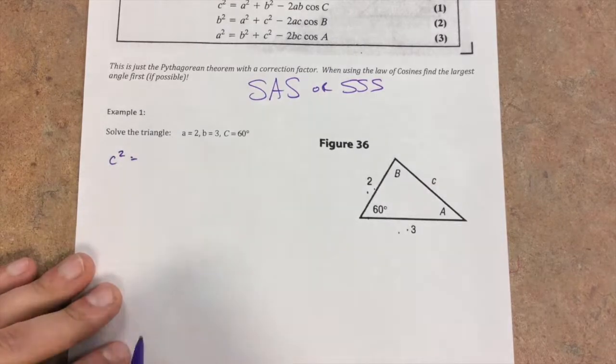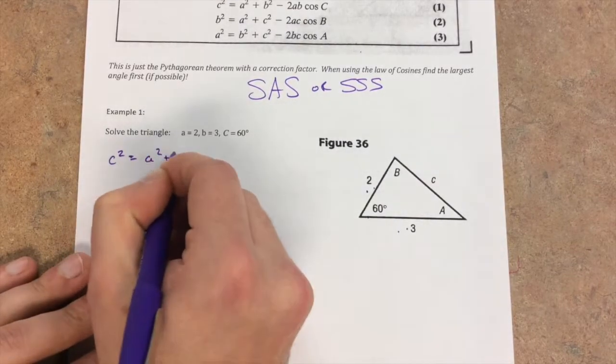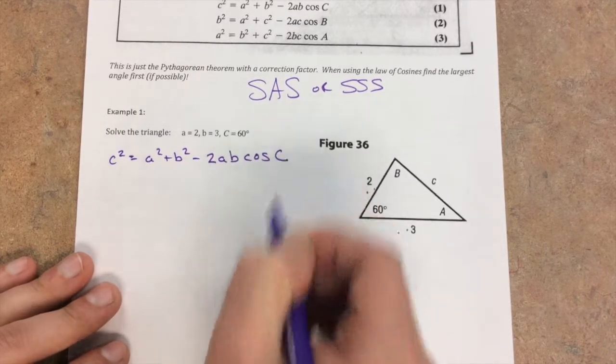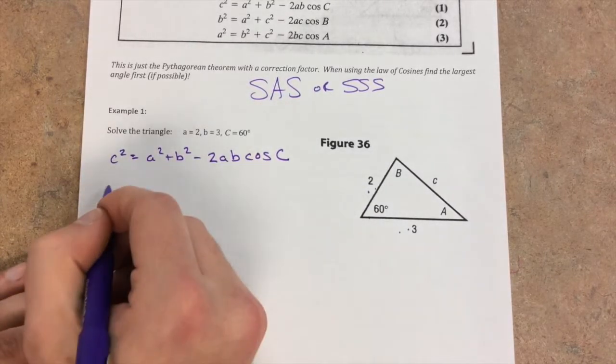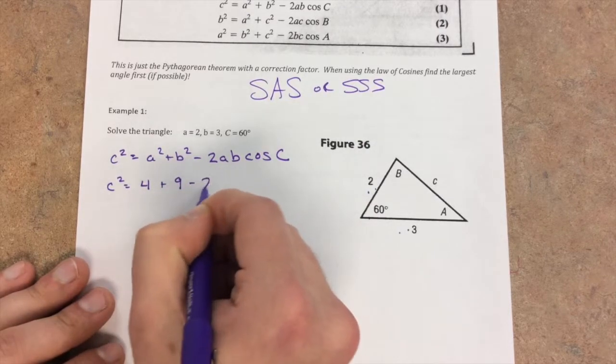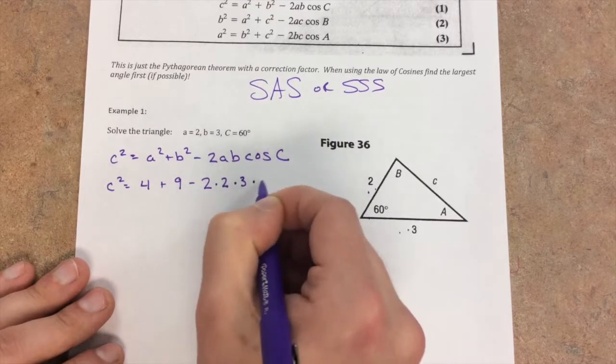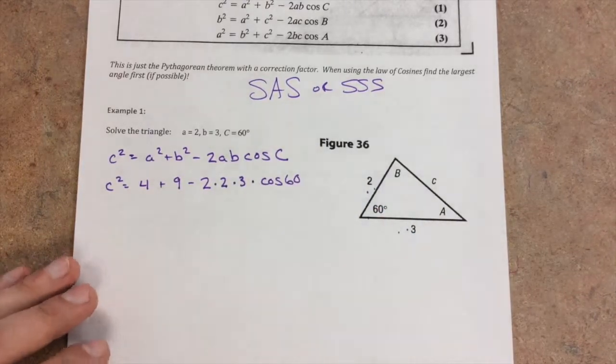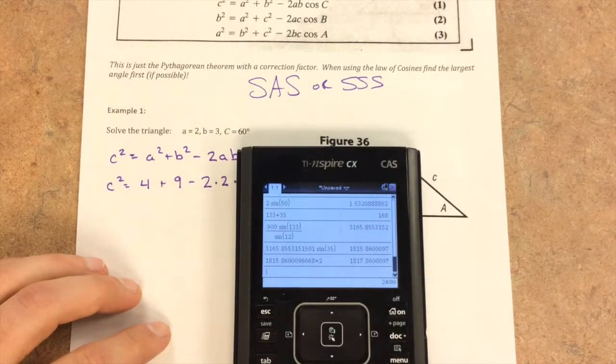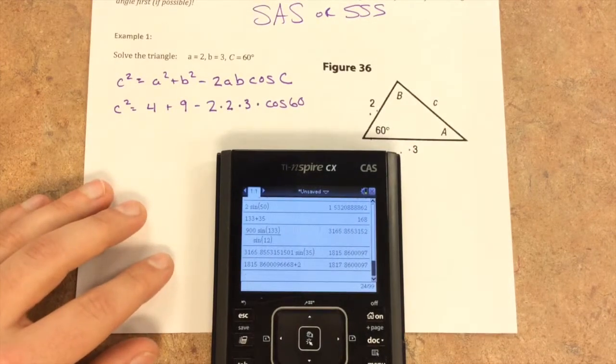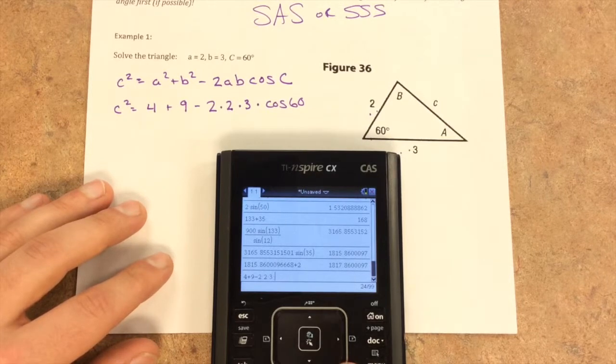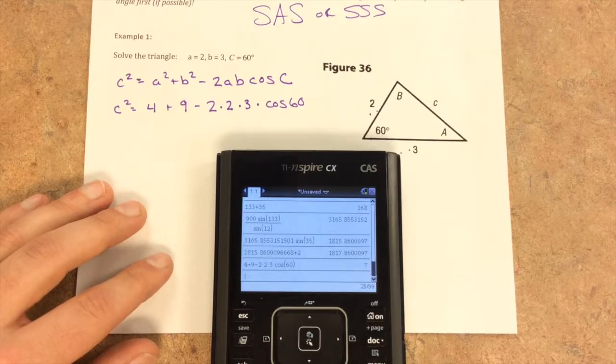C squared equals A squared plus B squared minus 2AB cosine C. I'm just going to write the formula first, then we can plug in our information. So C squared equals 2 squared plus 3 squared minus 2 times 2 times 3 times cosine of 60. If we know our unit circle, we know that cosine of 60 is 1 half. I have 4 plus 9 minus 2 times 2 times 3 times cosine of 60. I hit enter, I get 7.